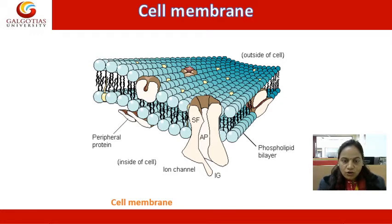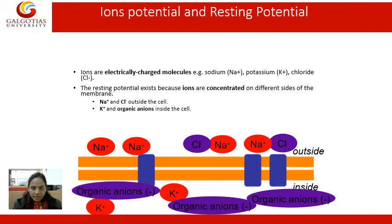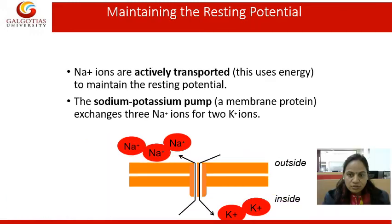We need to understand how the ion channels within the cell membrane function. Looking at the cell membrane, we examine how the electrical and chemical gradient at the semi-permeable cell membrane allows ions to pass through. Sodium ions and chloride negative ions are present outside, whereas organic ions and potassium ions are present inside. This describes the ion potential and resting potential.